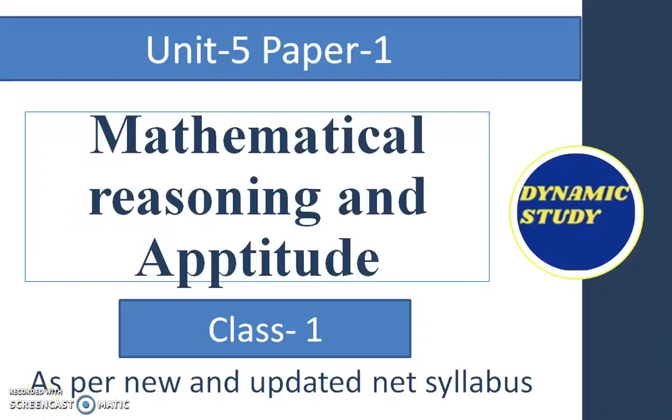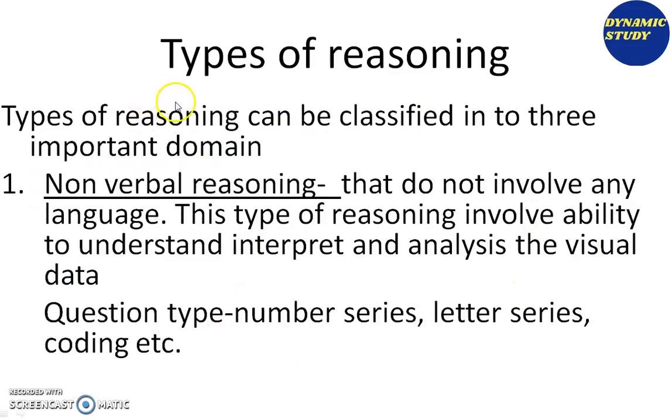Hello viewers, welcome to Dynamic Study. Today I am going to start Unit 5 of Paper 1, which is mathematical reasoning and aptitude. First of all, types of reasoning. Basically, there are three types of reasoning: verbal, nonverbal, and logical.